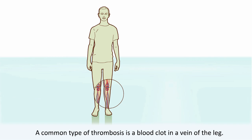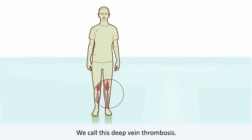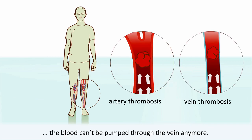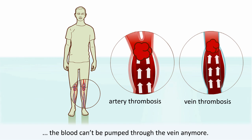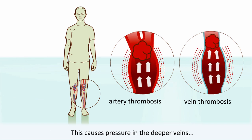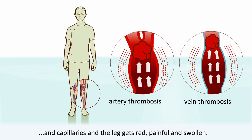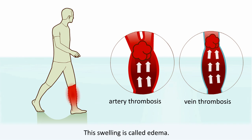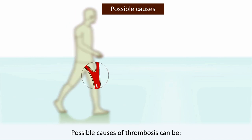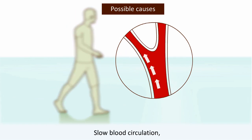A common type of thrombosis is a blood clot in a vein of the leg — we call this deep vein thrombosis. If the blood flow is obstructed, the blood can't be pumped through the vein anymore. This causes pressure in the deeper veins and capillaries, and the leg gets red, painful, and swollen. This swelling is called edema.